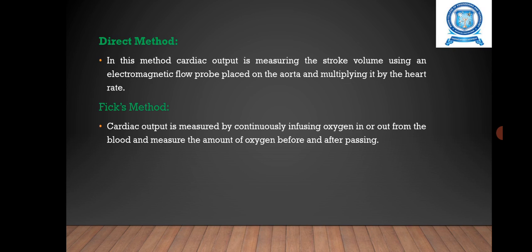First, the Direct method. In this method, cardiac output is measured by measuring the stroke volume using an electromagnetic flow probe placed on the aorta and multiplying it by the heart rate. This method involves surgery, so it's not preferred in routine applications.